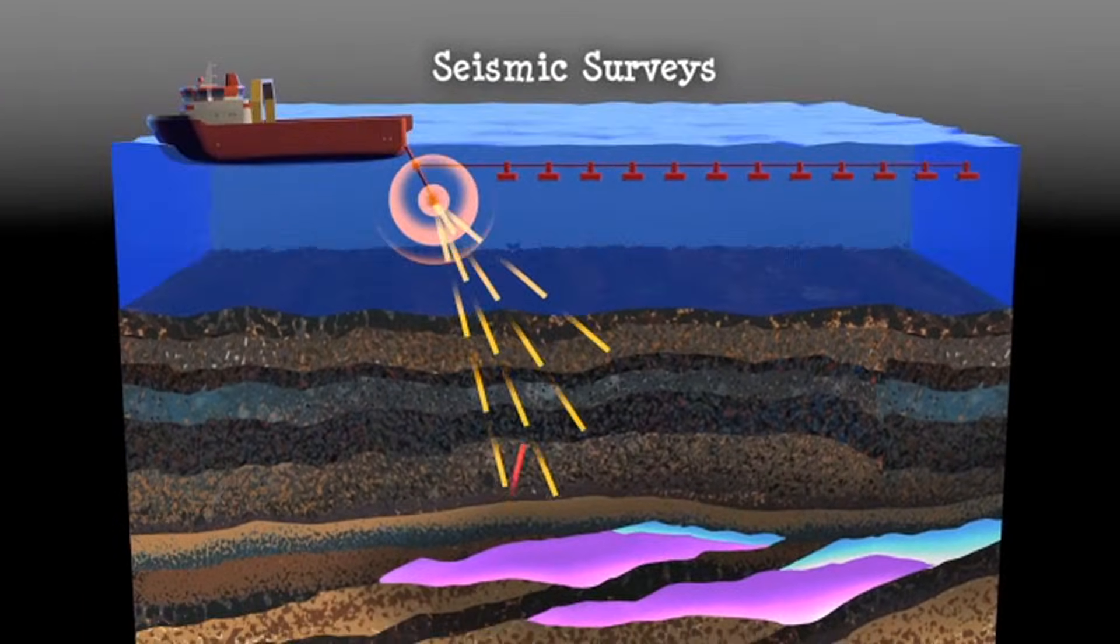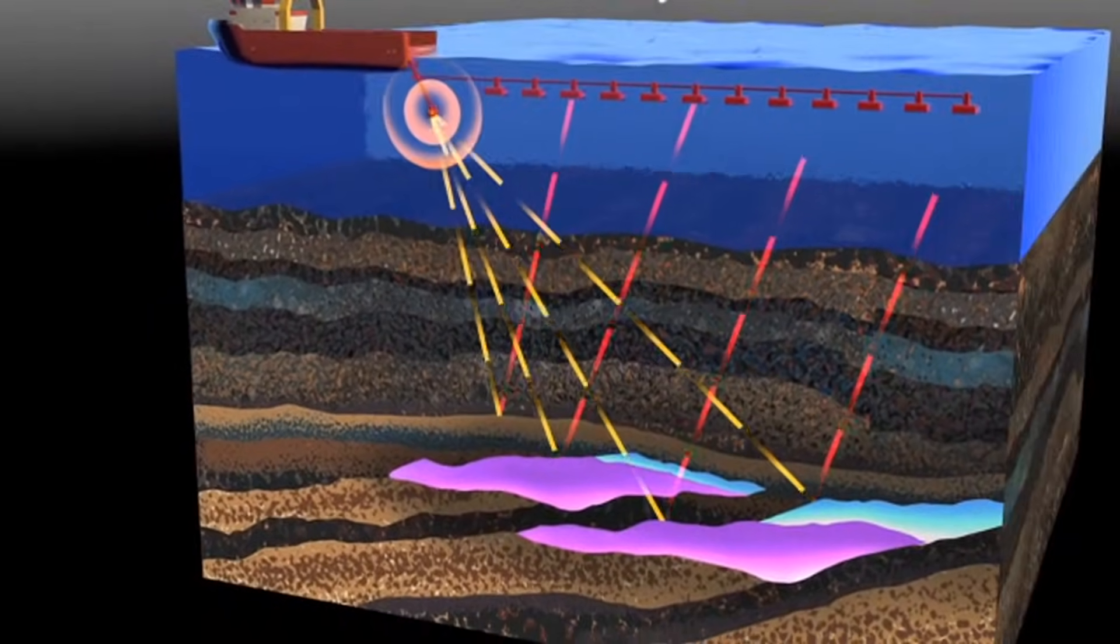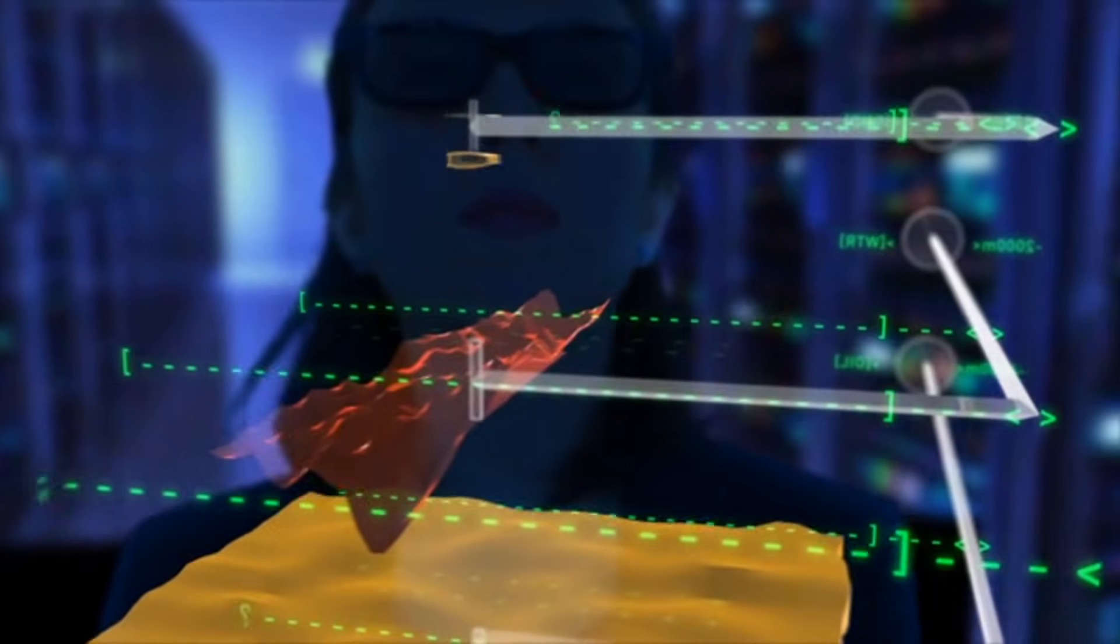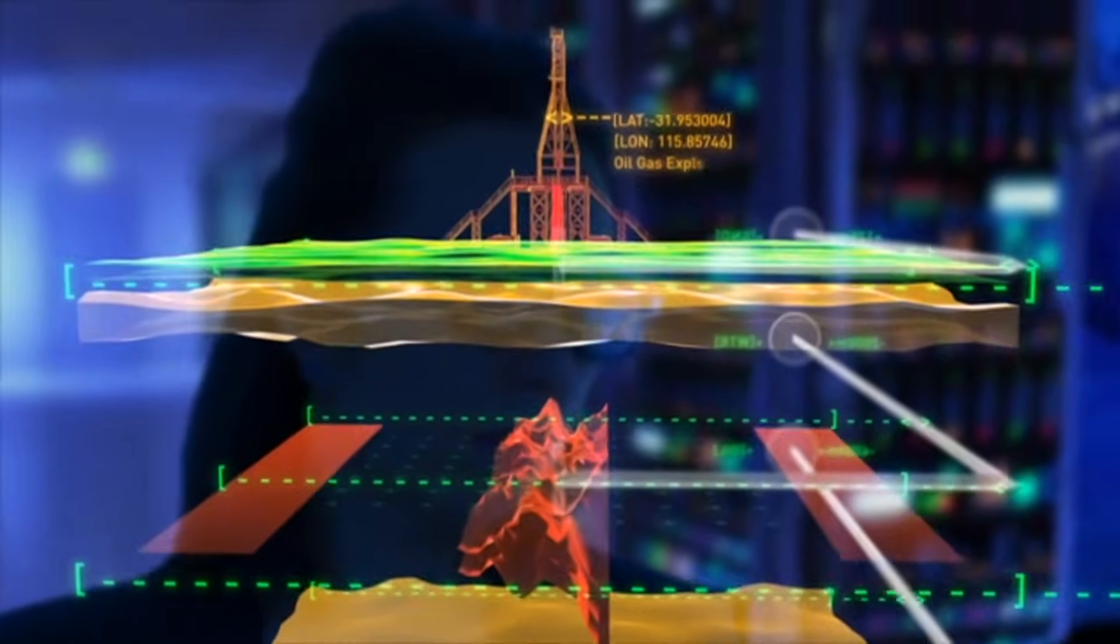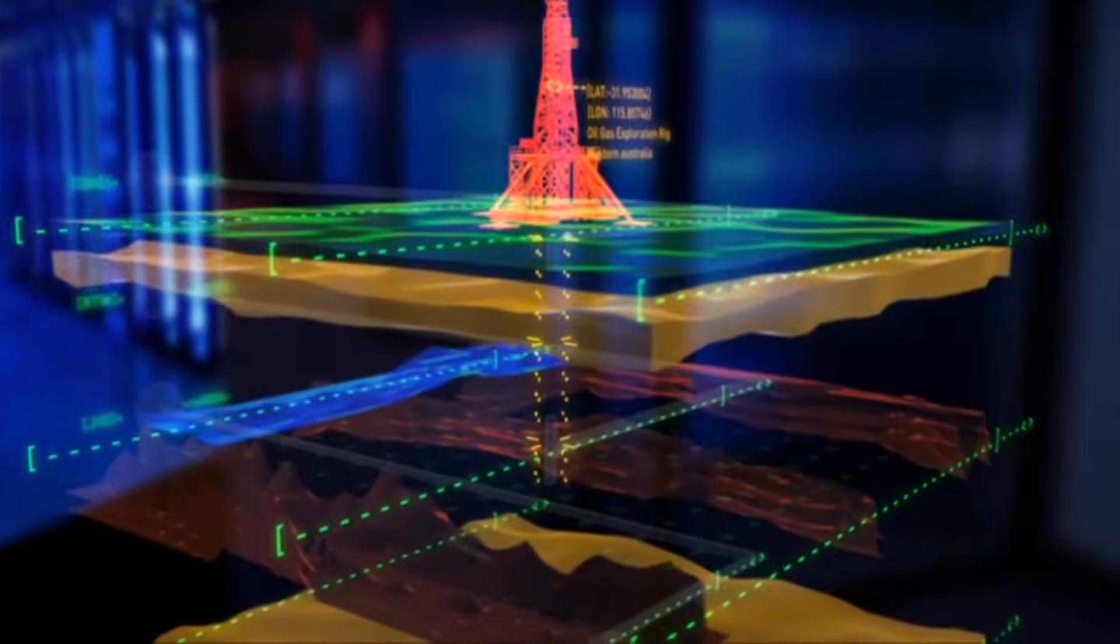Seismic surveys use reflected sound waves to produce a 3D view of the Earth's interior. New technologies, such as four-dimensional projections and sophisticated graphic renderings of rock structures, are improving the way we find conventional oil and gas deposits.